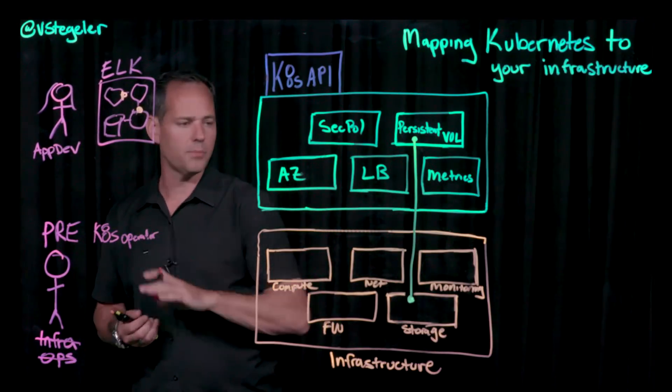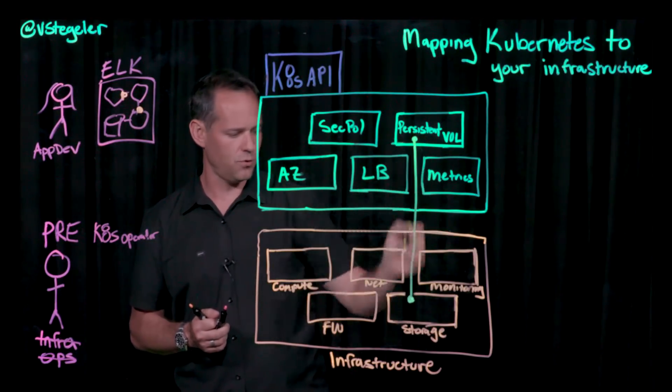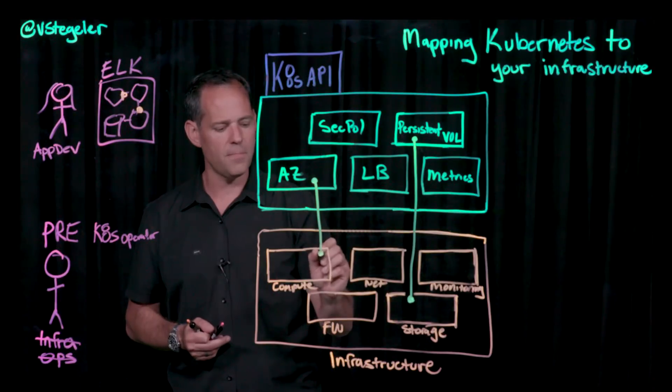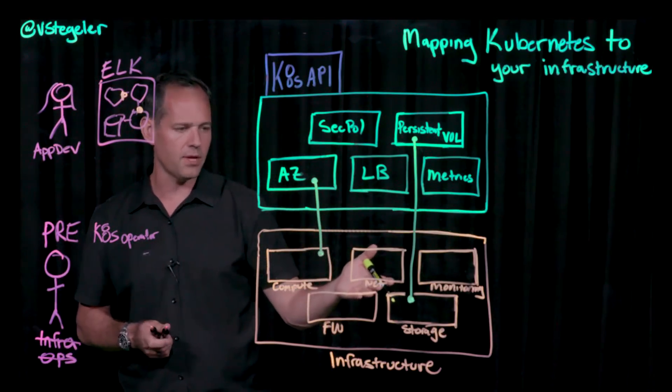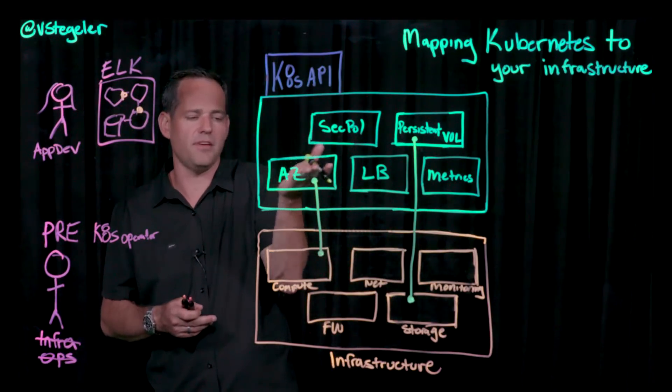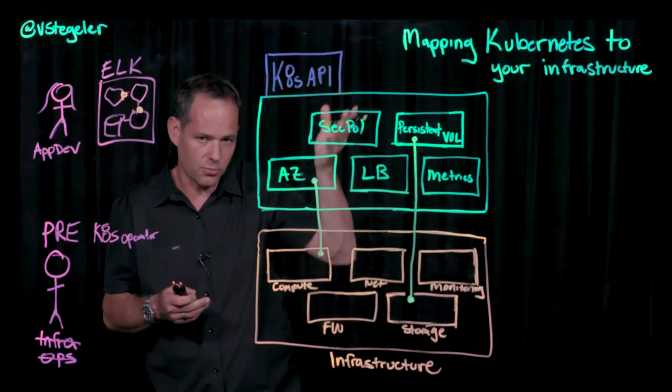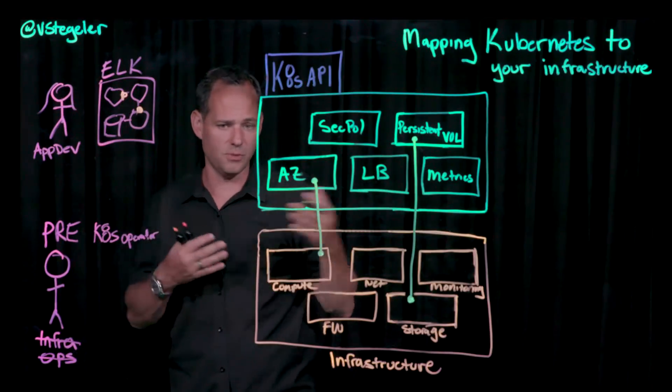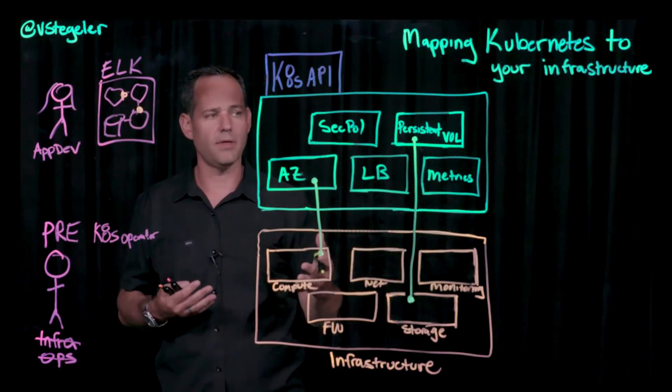They're going to be responsible for this mapping of persistent volumes, availability zones. If I'm leveraging on-prem infrastructure, I'm going to need to map the availability construct in Kubernetes down to a group of servers in my data center, in a specific rack, in a specific row.